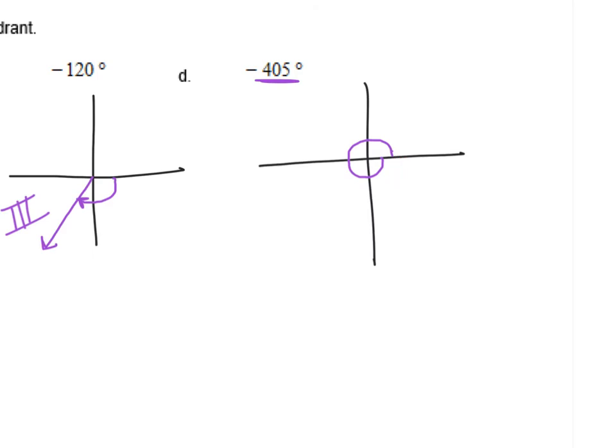So, halfway in. Draw your angle. That got a little sloppy right there. I'll do that one a little bit better. There we go. Don't forget the little arrow on that to show the direction. And that is a negative 405 degree angle. That is the fourth quadrant. So, a fourth quadrant angle.